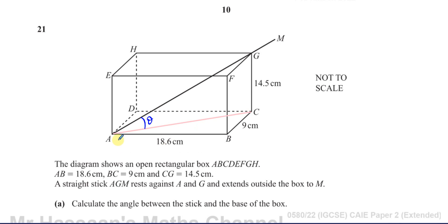Triangle ACG is actually a right-angle triangle. Looking at it in 3D, the floor of the cuboid and the side of the cuboid meet at right angles, so when you view it from the right angle you see a right-angle triangle in front of you. We know GC is 14.5 cm, but we don't yet know the other lengths.